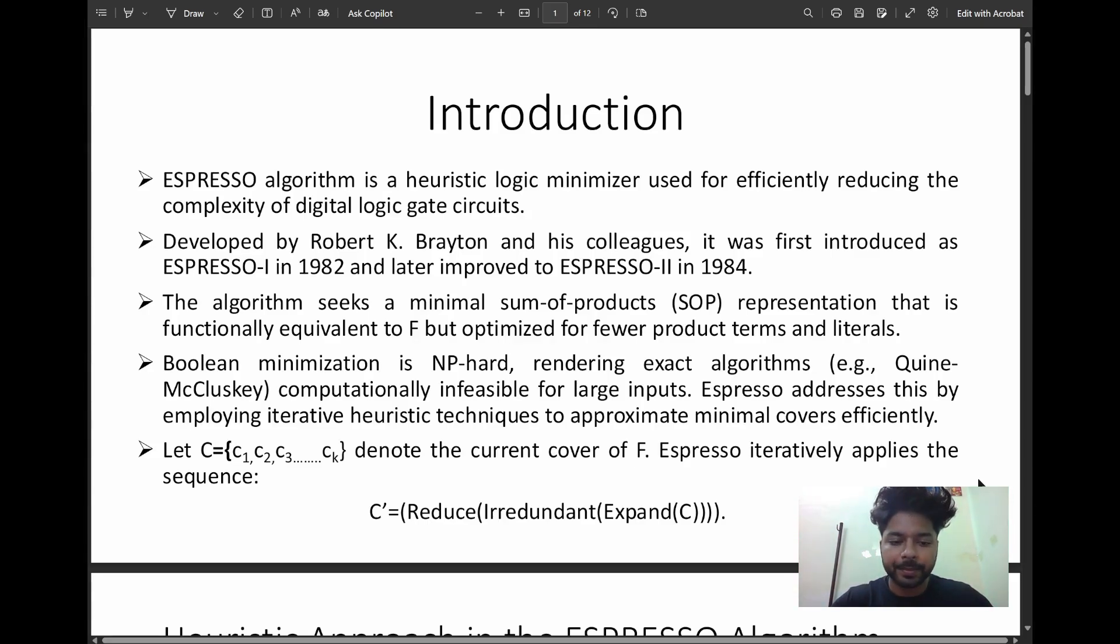So why are we using it? To minimize Boolean expressions is very difficult and time consuming for large inputs. Exact methods like Quine-McCluskey become too slow for large data inputs. So we are using the Espresso algorithm to solve using a smart way to quickly find a good solution without checking every possibility.